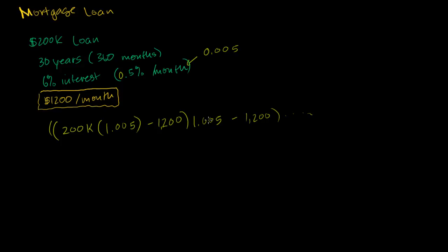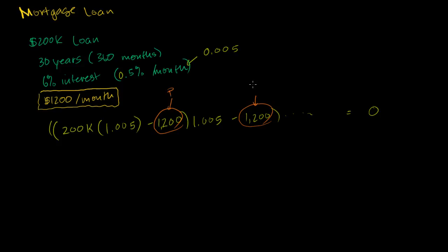This process happens 360 times. If you're trying to solve for the monthly payment, you'll end up with a huge expression with 360 sets of parentheses, and at the end it's all equal to 0 — because after your final payment you've paid off the house. But in general, how do they figure out this payment? Let's call that P.